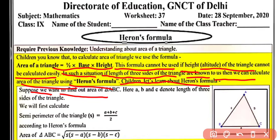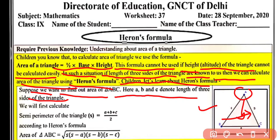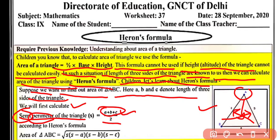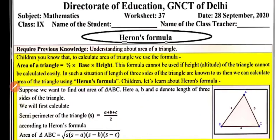Suppose we want to find the area of triangle ABC, where a, b, and c denote the lengths of the three sides. The side opposite to vertex A is a, opposite to vertex B is b, and opposite to vertex C is c. We will first calculate the semi-perimeter. Semi means half; perimeter is the sum of all sides. So semi-perimeter S equals a plus b plus c divided by 2.